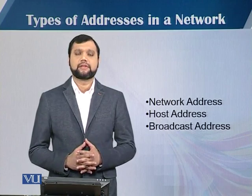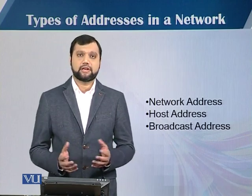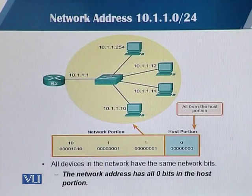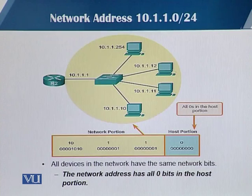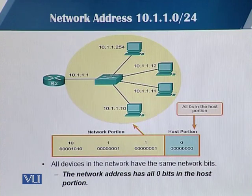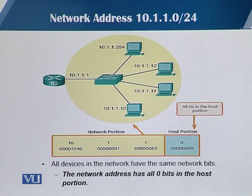In a network there are multiple types of network addresses. We will talk about three: the network address, host address, and broadcast address. The network address is one where all devices share the same network bits, and the host portion contains all zero bits. If you AND the subnet mask with the IP address, the result — with the host part set to zero — is the network address of the whole network.